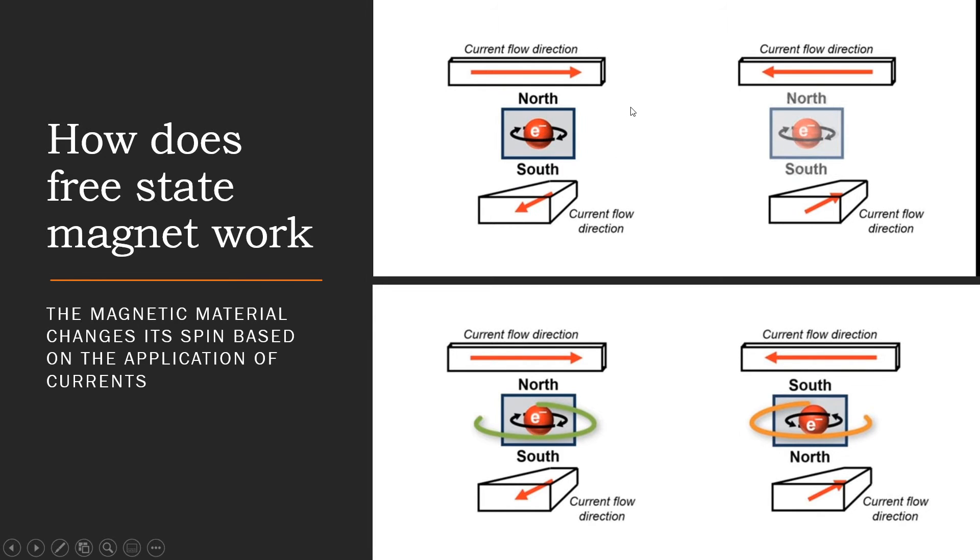So suddenly what if we change the current flow direction, opposite to that of this, from right to left and here inwards the frame? This thing will try to change the direction. I mean the spin will change with accordance with the current flow direction. So this thing which is clockwise initially will become anti-clockwise. This is how the free state magnet works.